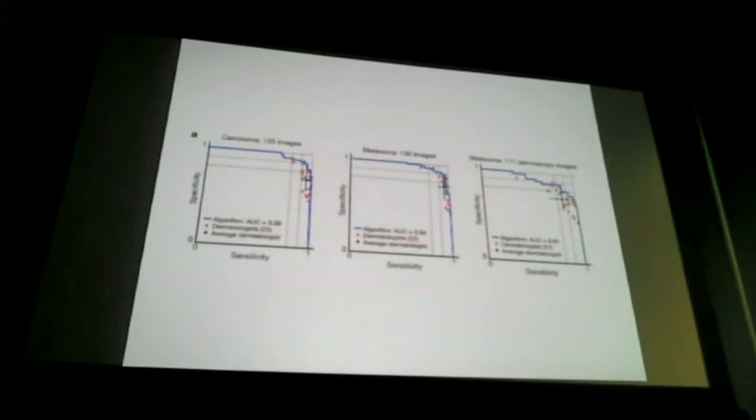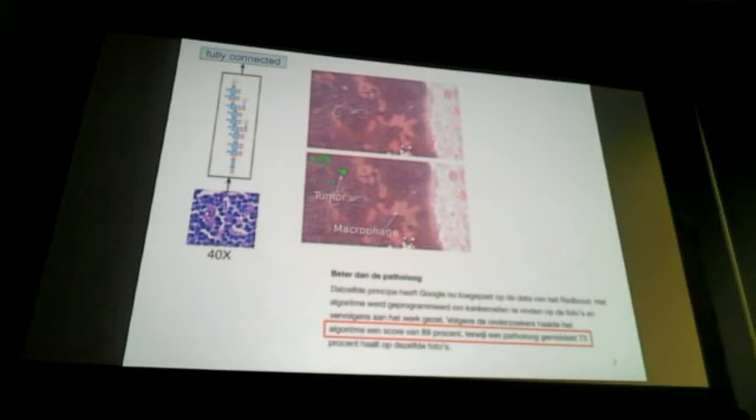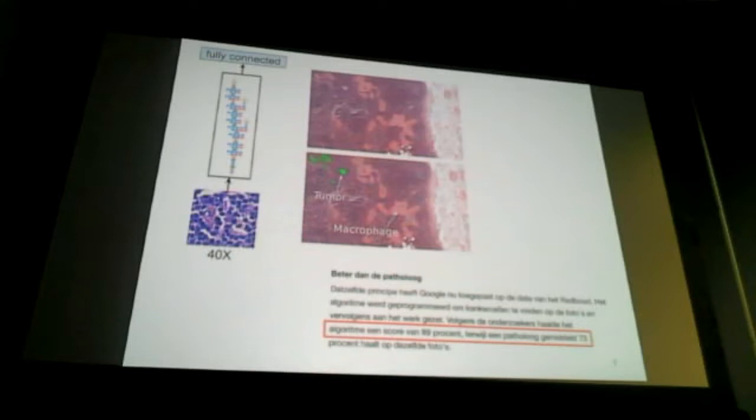Another example appeared in Dutch news: a computer recognizing cancer better than pathologists. A pathologist looks at very large gigabyte-scale images with many cells and must find cancerous tissue hiding in a small region — a very tedious task. Many groups, including Google and the University of Nijmegen, have automated this, finding that the algorithm can outperform the human pathologist on this specific task.